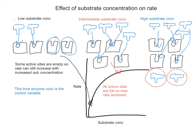At high substrate concentration, it doesn't matter how much more substrate you add — the rate is constant because all active sites are full. It's important to remember, and this is a common misconception, that the reaction hasn't stopped; it's just not going any faster. There aren't enough active sites to create more enzyme-substrate complexes. The reaction continues, but active sites need to be freed up once products have been formed before they can be reused. You can't just increase substrate concentration to increase rate any further.